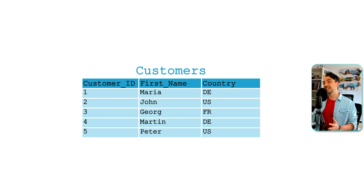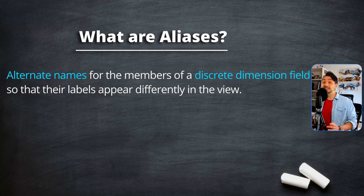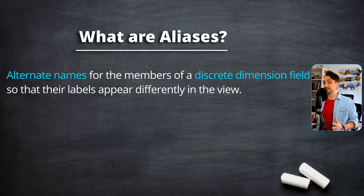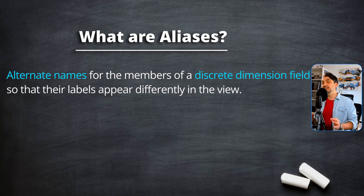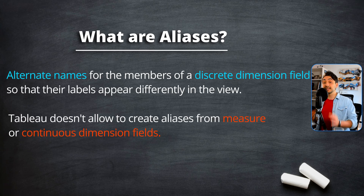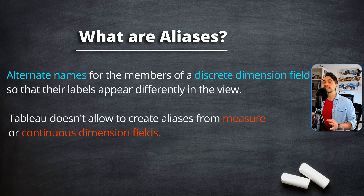Aliases in Tableau are alternate names for the members of a discrete dimension field, so that their labels appear differently in the view. Notice that I say 'discrete dimension field' — that's because Tableau does not allow you to create aliases for measures or for continuous dimensions. In Tableau you can create aliases only for fields with the role of discrete dimension.